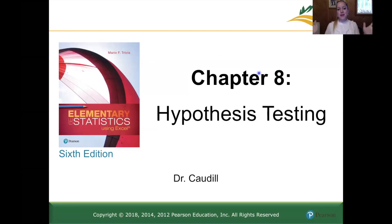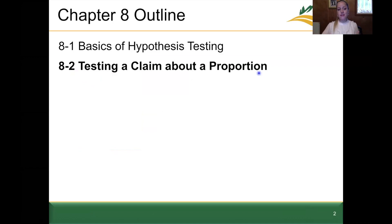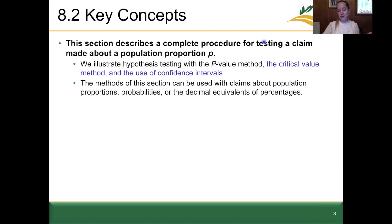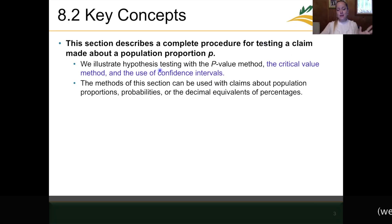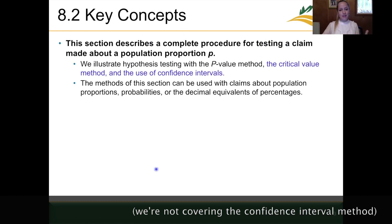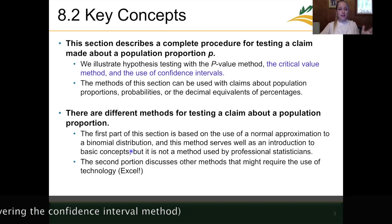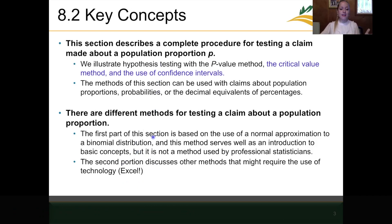Hi everyone, welcome back to chapter 8. This is 8.2 part 2. We're still covering testing a claim about a proportion specifically. In 8.2 part 1, we got through some key concepts. Now in 8.2 part 2, we'll cover using hypothesis testing via the critical value method. After covering those two additional methods, we'll look a little bit more about how we can use Excel for hypothesis testing.